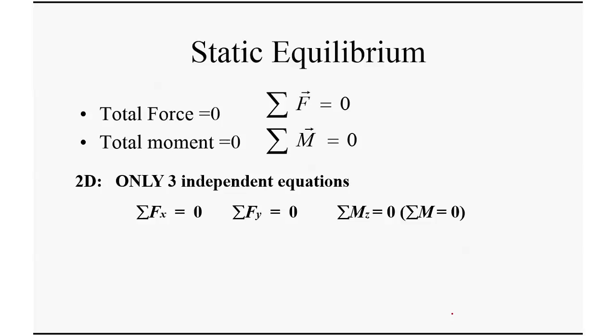Good afternoon everyone, let's get started. So last time we briefly reviewed statics. We talked about static equilibrium — for any object to be in equilibrium, you must have all forces together be zero, so the summation of forces is zero, and also the summation of moments must be zero. For the 2D case, this set of six equations can be simplified to only three independent equations: summation of forces in x equals zero, summation of forces in y equals zero, and summation of moments equals zero.